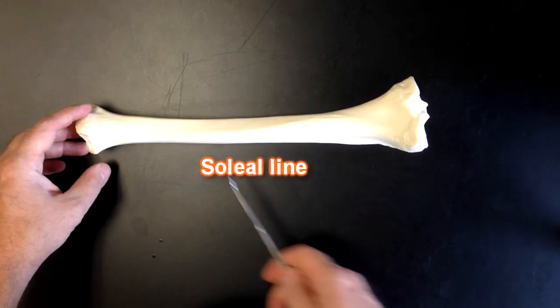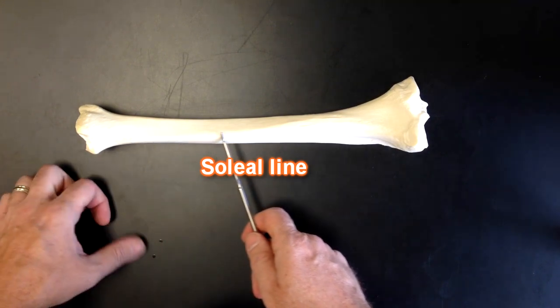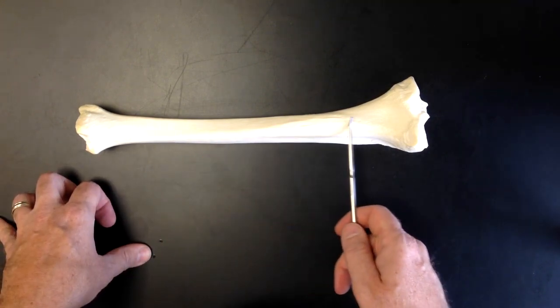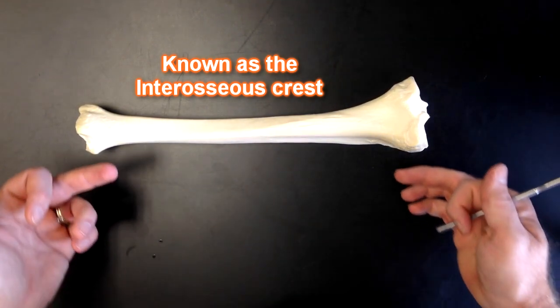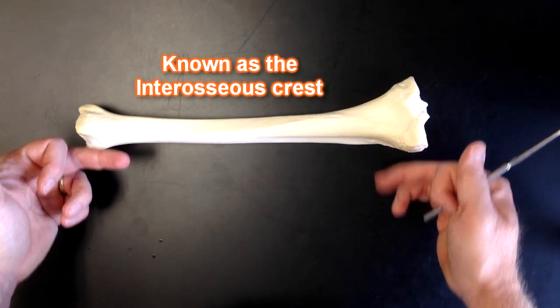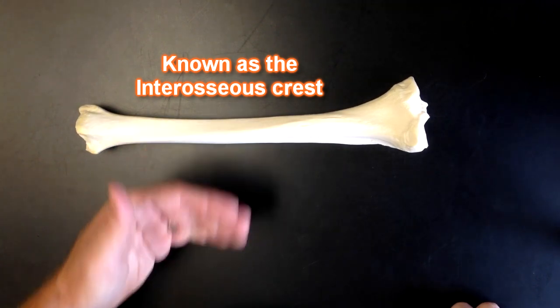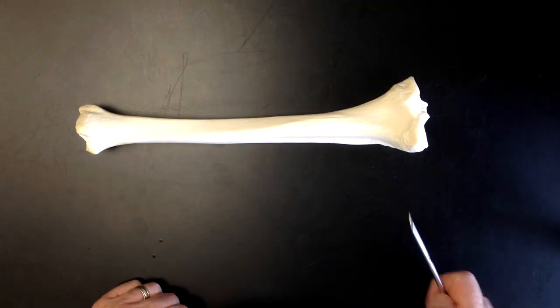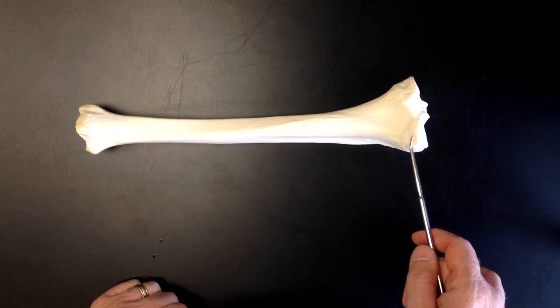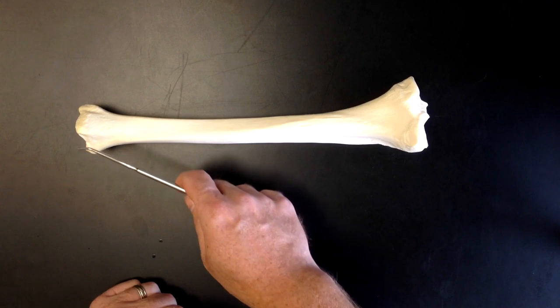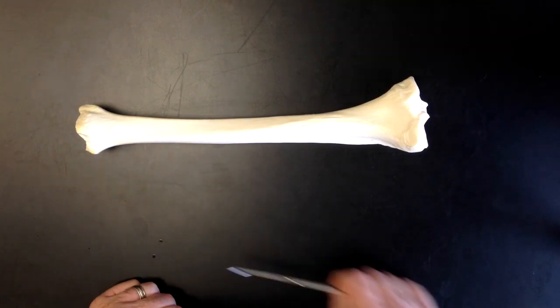And then there's going to be a surface right here for the interosseous membrane. That interosseous membrane is going to attach to the fibula as well. It's called interosseous because it's between those two bones. And we can also see the articular surface for the fibula up here. Specifically, the head of the fibula would articulate here, and down here is where the lateral malleolus would attach.